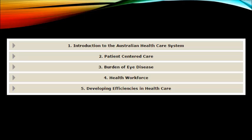Now let's have a look at the actual modules themselves. There are five: Introduction to the Australian Healthcare System, Patient Centred Care, Burden of Eye Disease, Health Workforce, and Developing Efficiencies in Healthcare. They all have their own specific folder. I'll open the first one to explain the content contained within — they all look the same, so let's just use the first one as an example.